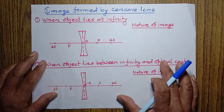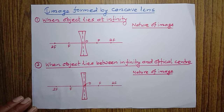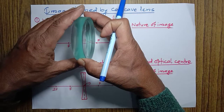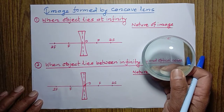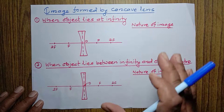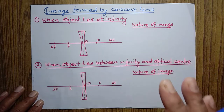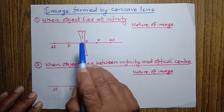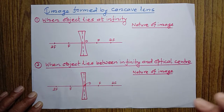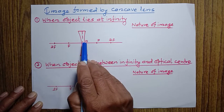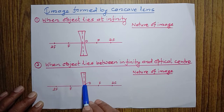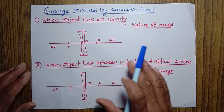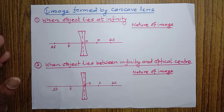Now, if an object is placed in front of a concave lens, we want to know what type of image it forms, where the image forms, and what is the nature of the image. It is different from a convex lens. There are only two conditions. When the object is placed at infinity, the concave lens forms one type of image. But when it is placed anywhere between infinity and the optical center, it forms another type of image. In case of convex lens there were six different types, but here we have only two.